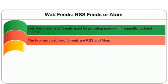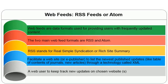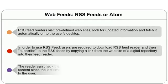Web feeds and RSS feeds: RSS stands for Really Simple Syndication or Rich Site Summary. The summary of a complete new subject can come in one line to the user — that is why it is called syndication. This facilitates a website publisher to list the newest published updates, such as table of contents or new article lists, through a technology called XML. RSS uses an XML format, and a feed reader will read it. If you subscribe to the feed, you get it automatically, allowing web users to keep track of new updates on chosen websites.